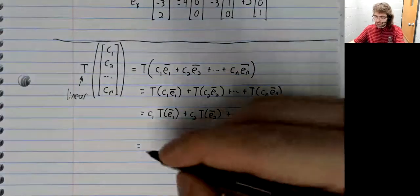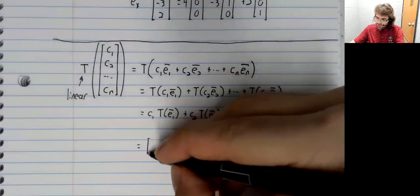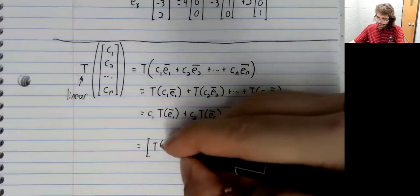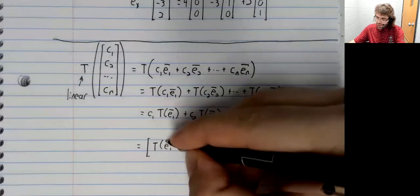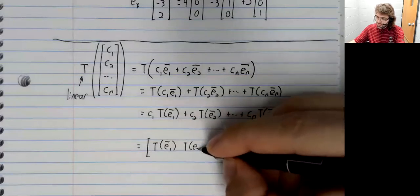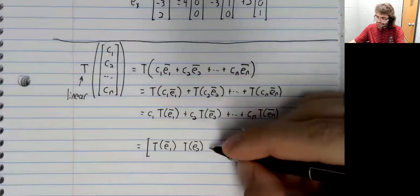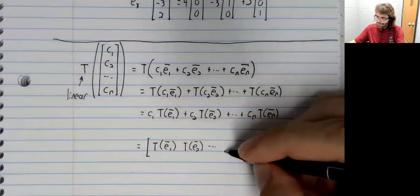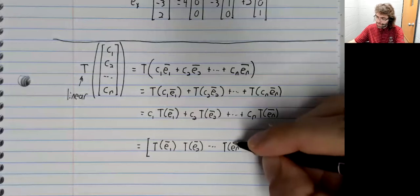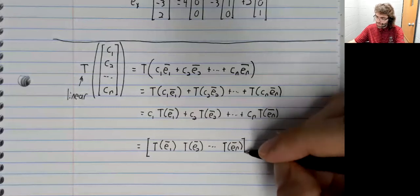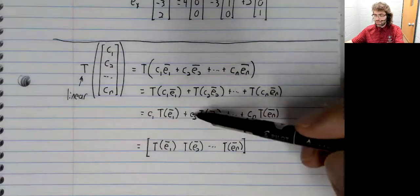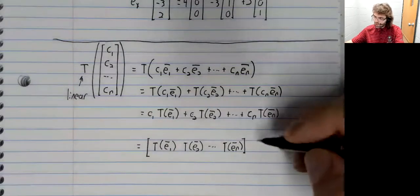the product of the matrix that has these vectors as its columns, times the vector of these coefficients.